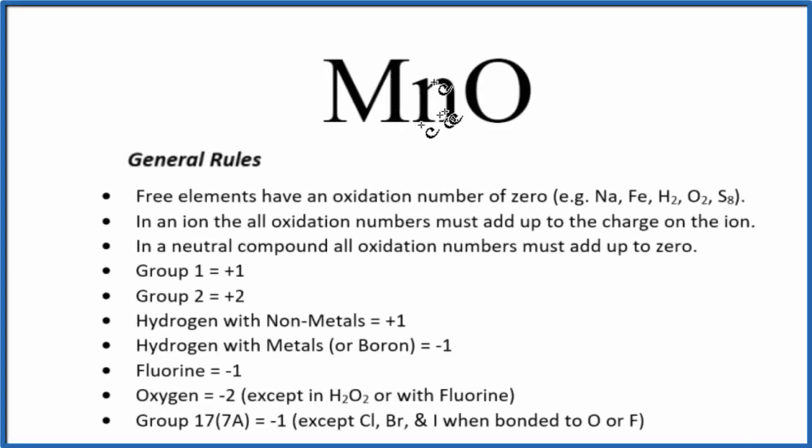To find the oxidation numbers for each element here in MnO, manganese 2 oxide, we'll use these rules. The first thing you notice is there's no negative or positive sign after the MnO. That's because it's a neutral compound. And with a neutral compound, all the oxidation numbers add up to zero, so we're looking for...